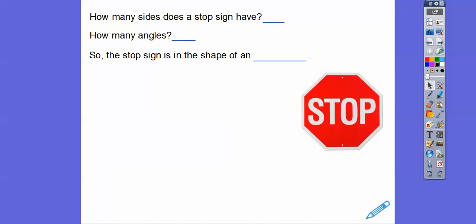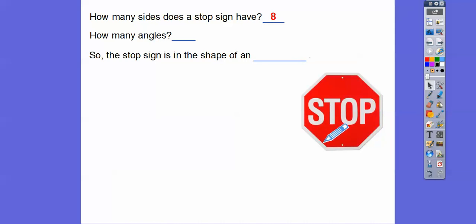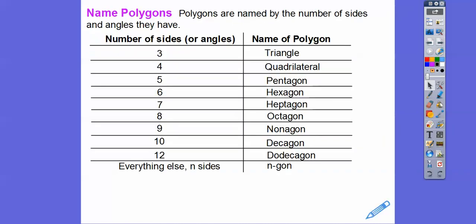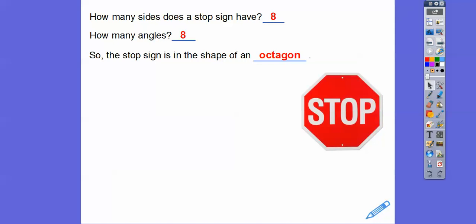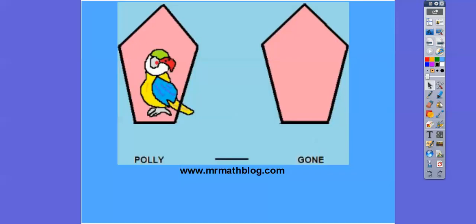How many sides does a stop sign have? Let's count: one, two, three, four, five, six, seven, eight — eight sides. How many angles? Same as the sides, but let's count: one, two, three, four, five, six, seven, eight — eight angles. So what shape is a stop sign? Eight sides means octagon. The octopus also has eight legs — that's why it's called an octopus! So a stop sign is an octagon. I hope that lesson makes sense, and speaking of polygons, there we go.